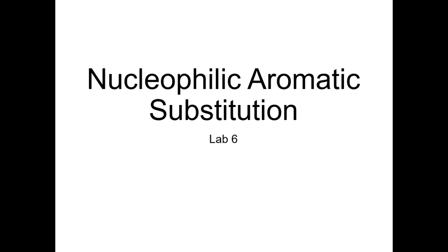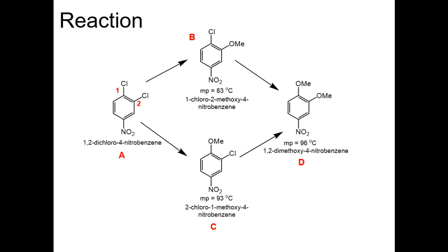Please notice the nomenclatures. In this experiment, we will substitute one of the chlorines in the aromatic compound A with a methoxy group, which is a nucleophile. There are two chlorines in compound A, so there is a possibility of forming either compound B or C. Melting point will be used to identify which compound is formed. There is also a possibility that both the chlorines get replaced with the methoxy group, forming compound D.